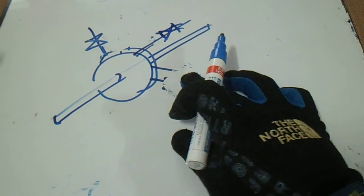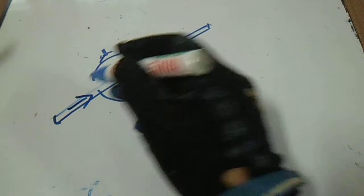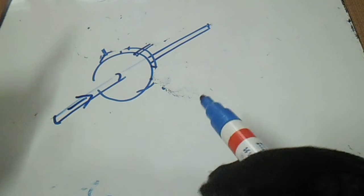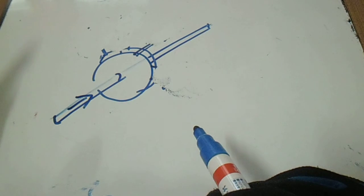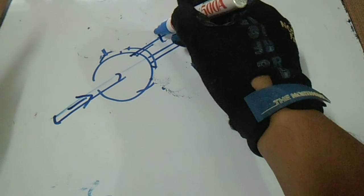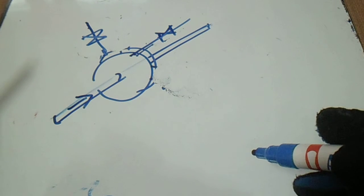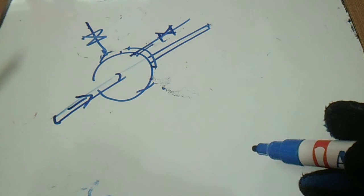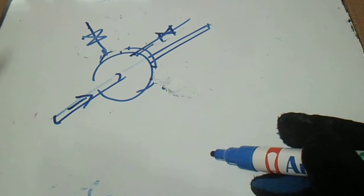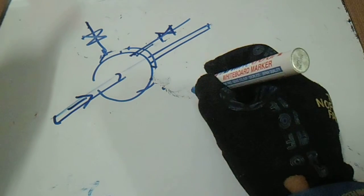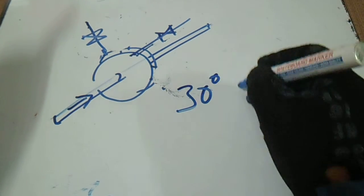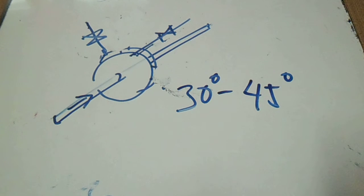Next is for cold operating conditions. For cold operating, the angle is 0 degrees to 45 degrees, with the position the same as previously shown. Remember, our required standard is 30 degrees to 45 degrees for the standard installation.